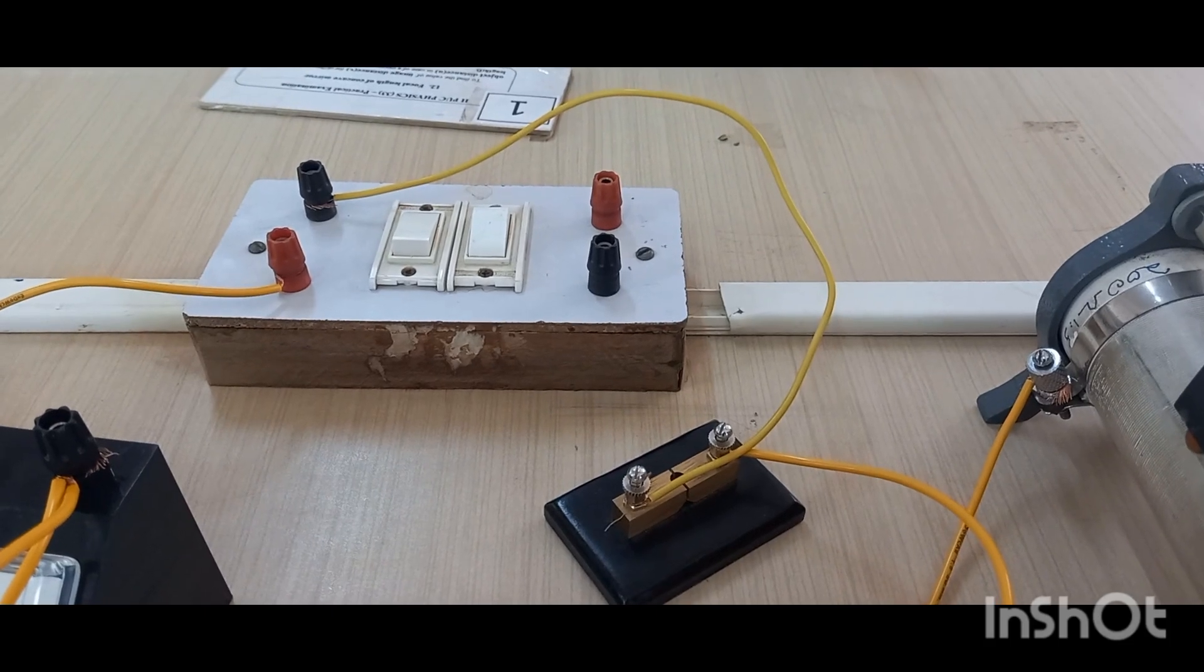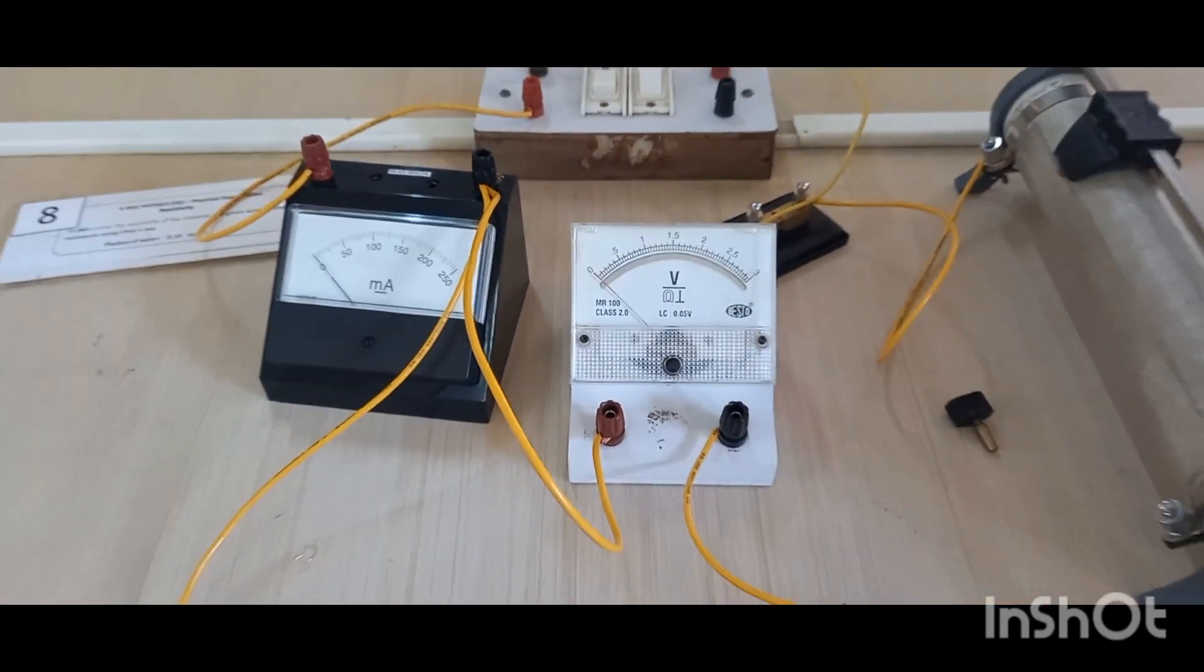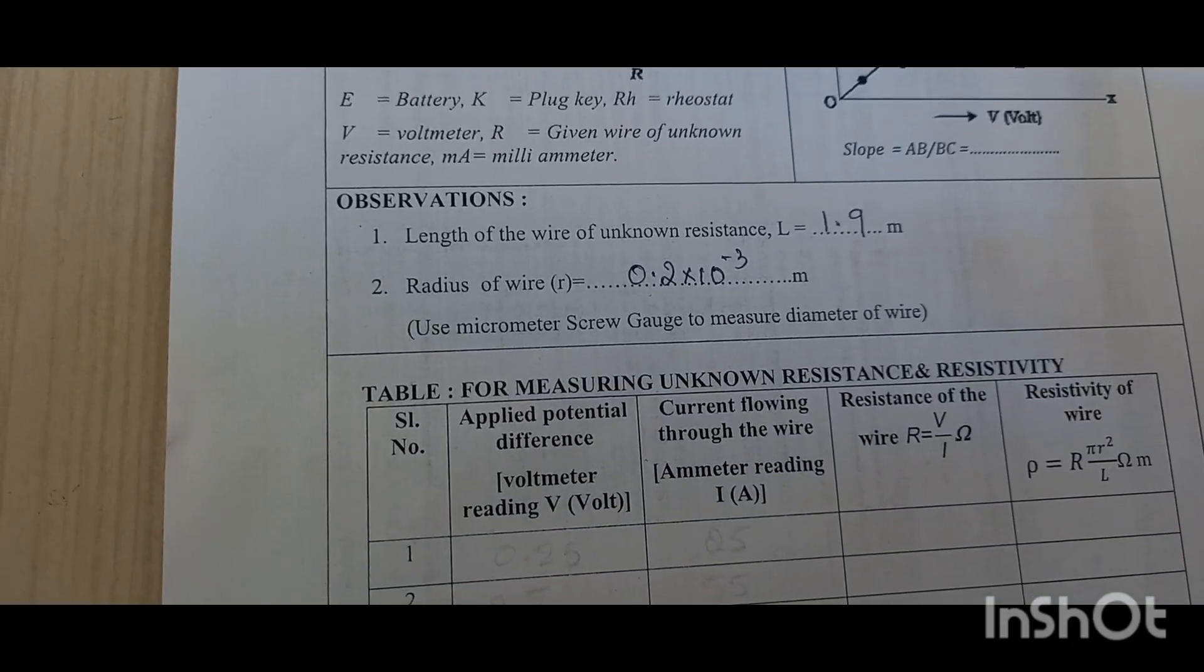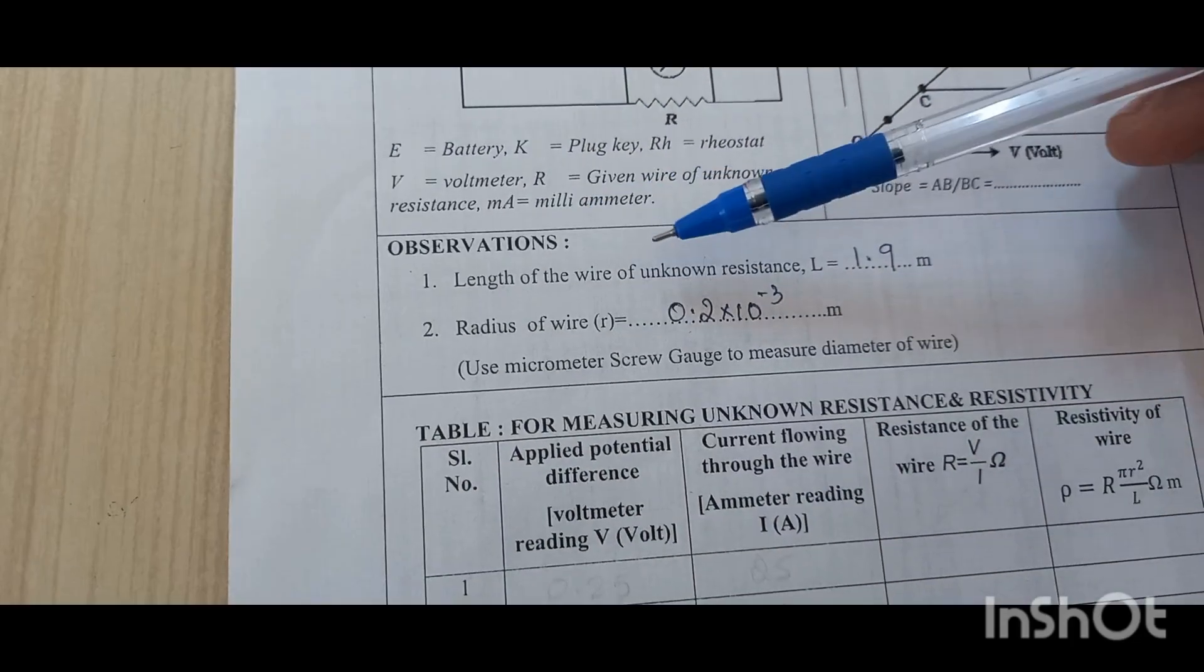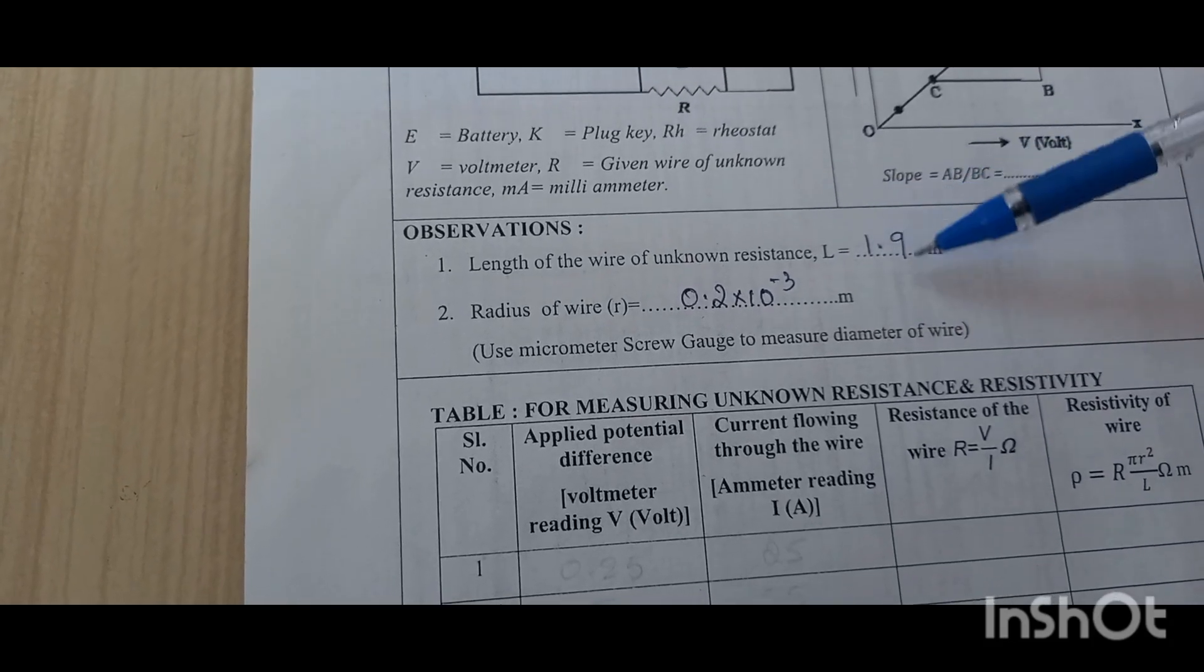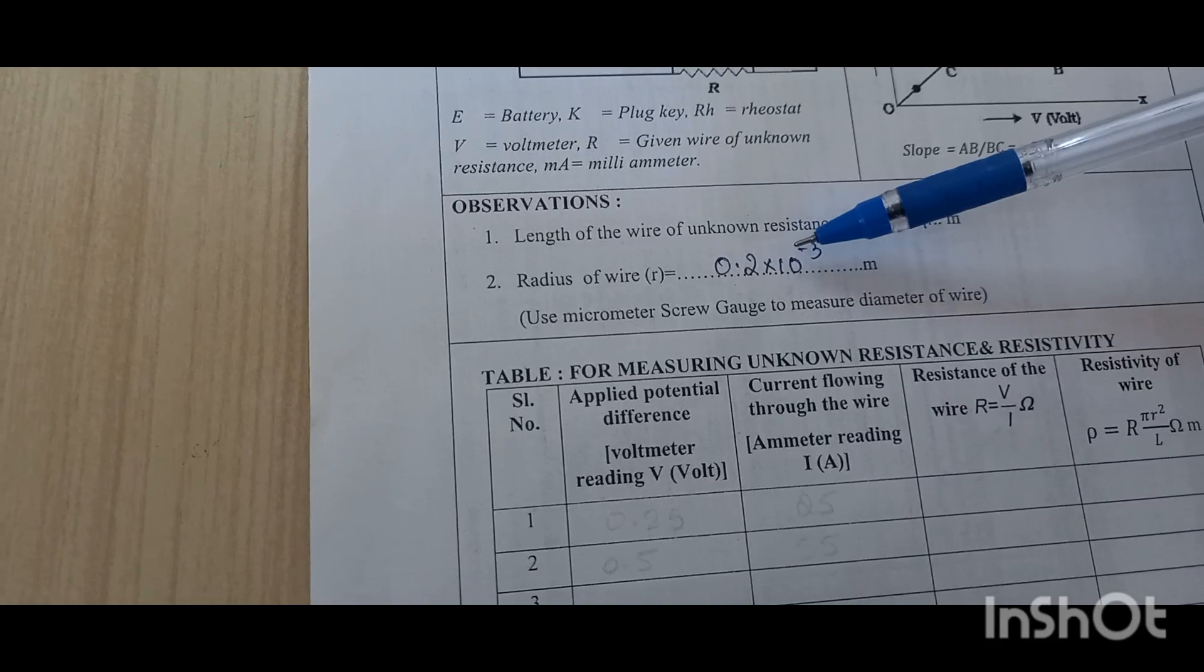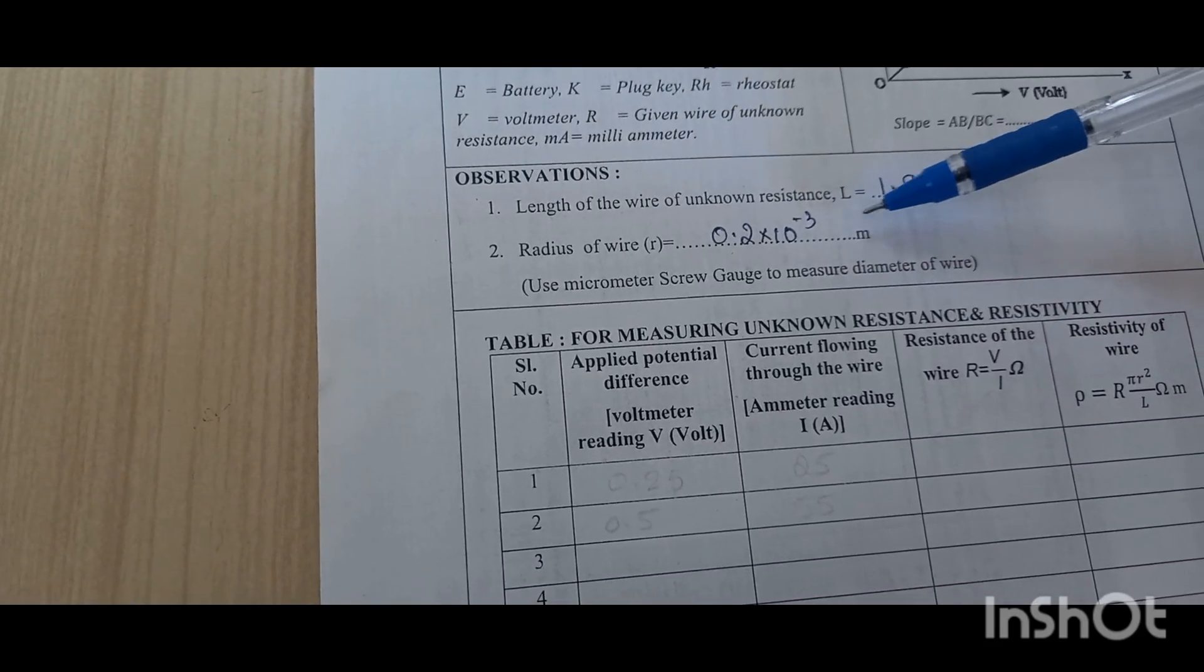So this is the connection. You have to connect neatly like this. The observation of this experiment is length of the wire of unknown resistance. You have to write the observation L equal to 1.9 meter and radius of the wire 0.2 into 10 to the power of minus 3 meter.